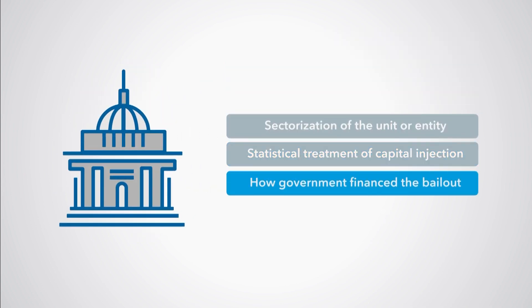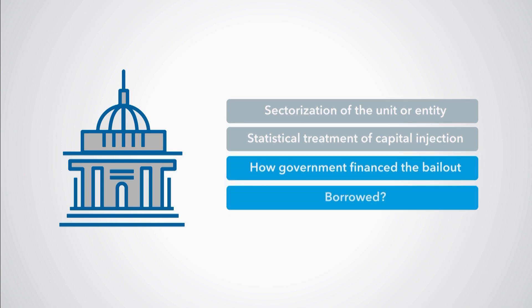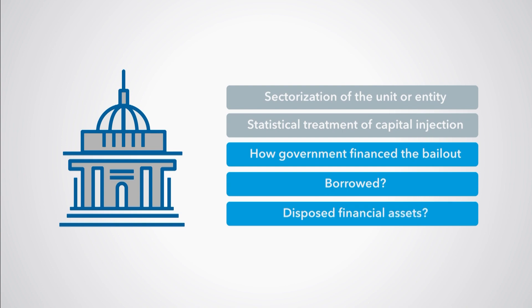The third issue is how government has financed the financial bailout — in other words, did government borrow to provide the bailout funds to the distressed corporation, or did it dispose of some of its financial assets to do so? If the financing of the financial bailout involves debt instruments, then such financing would affect government and, more broadly, public sector debt.